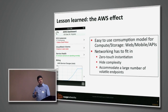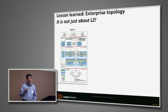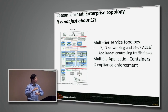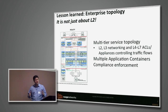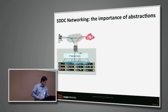Basically, it's about a self-serving network. And it's not just about layer two — the usual enterprise topology is much more complex. What you have is a multi-tier service topology where you can have multiple application containers located in different security domains. The networking in the middle has to provide L2, L3 networking, maybe L4 to L7 ACLs. You might need to mix in appliances to steer traffic between these application containers and isolate them from the public domain and from each other.